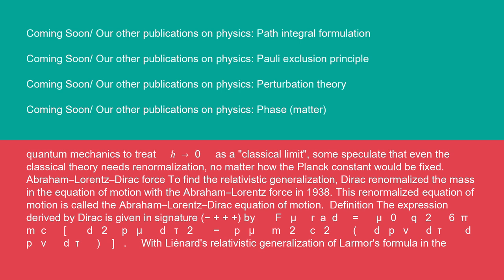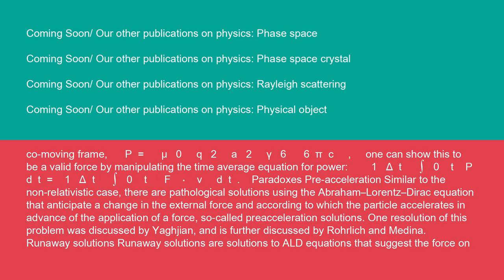Abraham-Lorentz-Dirac force: to find the relativistic generalization, Dirac renormalized the mass in the equation of motion with the Abraham-Lorentz force in 1938. This renormalized equation of motion is called the Abraham-Lorentz-Dirac equation of motion. Definition: the expression derived by Dirac is given in signature (-,+,+,+) by F^μ_rad = (μ₀q²)/(6πmc)[d²p^μ/dτ² - (p^μ/m²c²)(dp^ν/dτ)(dp_ν/dτ)]. With Lienard's relativistic generalization of Larmor's formula in the co-moving frame, P = (μ₀q²A²γ⁶)/(6πc). One can show this to be a valid force by manipulating the time average equation for power: (1/Δt)∫₀^t P dt = (1/Δt)∫₀^t F·v dt.